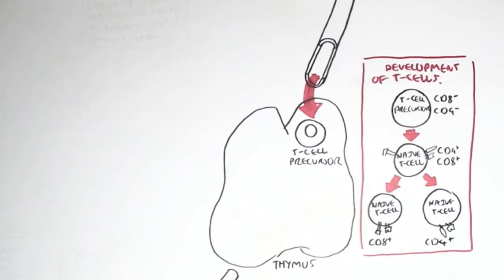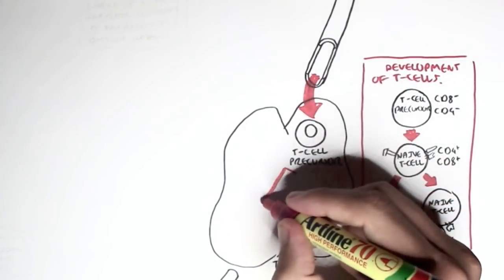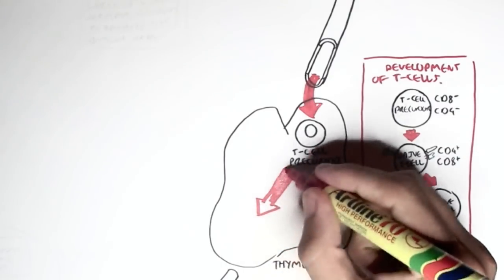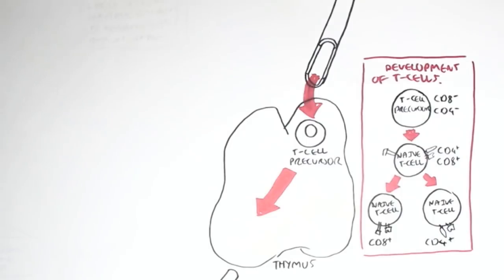So again, this T cell precursor will become either a naive T cell CD8 or a naive T cell CD4. You might have remembered me saying that a CD4 cell is a T helper cell and that a CD8 cell is a T killer cell. This is true in a way, but because these cells are CD4 and CD8 cells here in the thymus are still naive, they are still just CD4 and CD8 and they can become different types of cells later on once activated. However, generally a CD4 cell will become a T helper cell and generally a CD8 cell will become a T killer cell once activated.